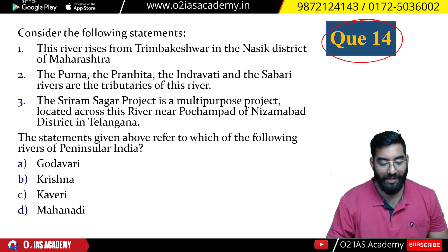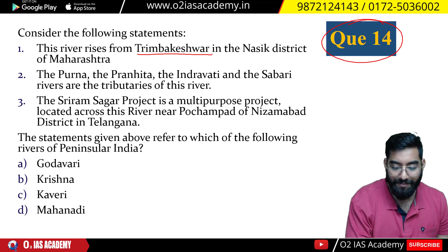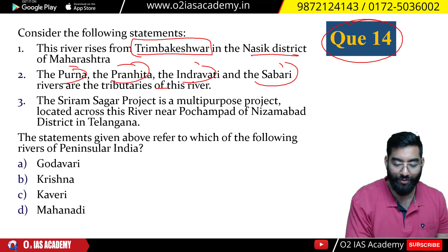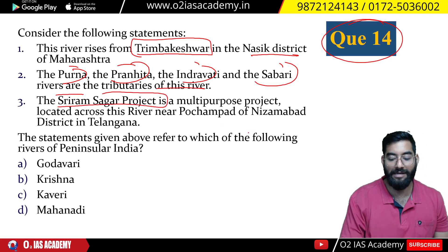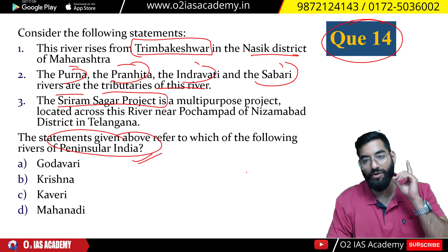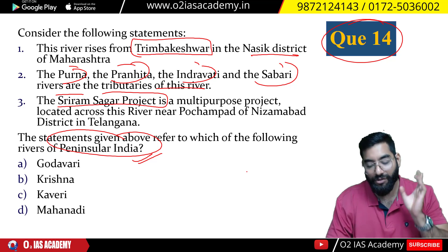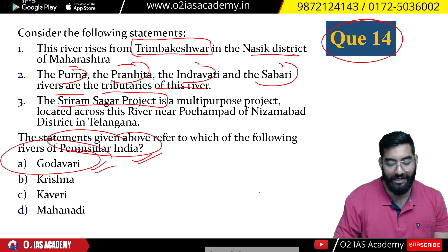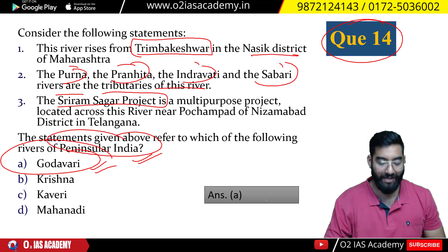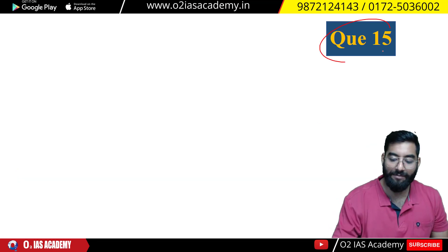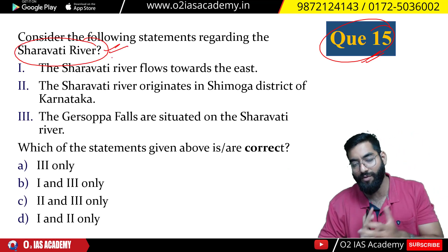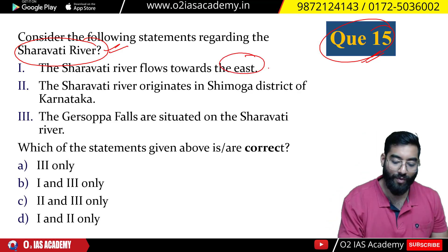Question number 14: A river rises from Trimbakeshwar in Nashik district, and its tributaries include Purna, Pranhita, Indravati, and Sabari. Which river is being described? Pause the video and answer. The correct answer is Godavari — all of these are Godavari's tributaries, and its source is Trimbakeshwar; it flows towards the east.